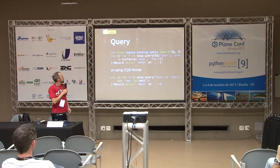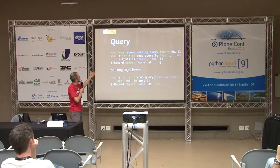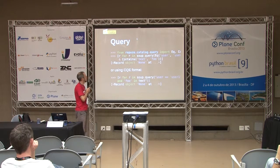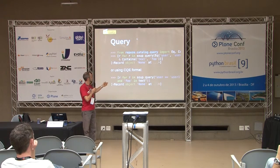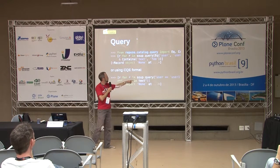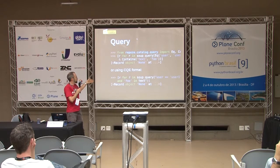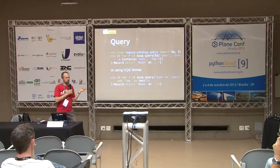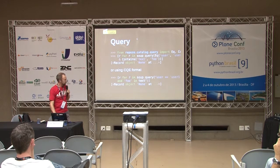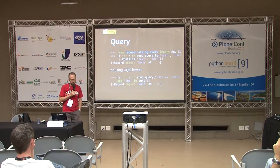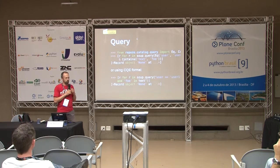Then, you can query your data using a Repose Catalog. You can write a query using those keywords, or you can also use a CQF format, which is much easier to read — like 'user == user_one and foo in text' — and it just returns a record. It can be run in lazy mode, of course, and it's very, very efficient. To do that, you need to define some indexes — different types, quite similar to the ZCatalog: you have a text index, a field index, and so on.